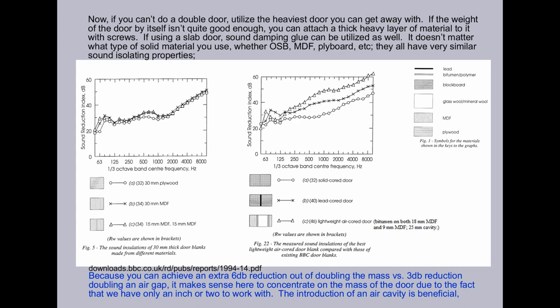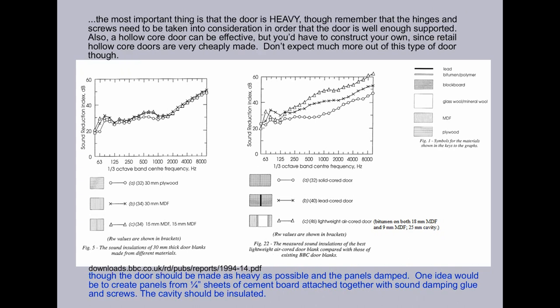It doesn't matter what type of solid material you use, whether OSB, MDF, ply board, etc. They all have very similar sound isolating properties. The most important thing is that the door is heavy.